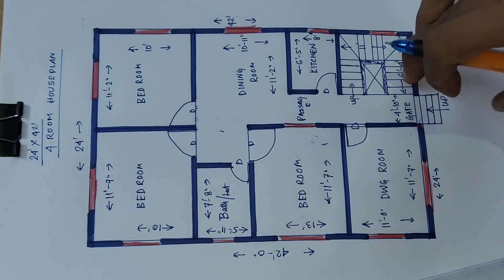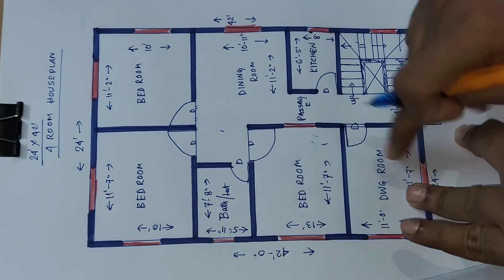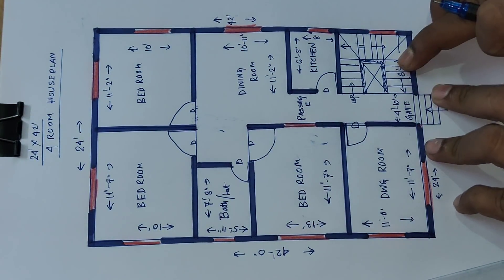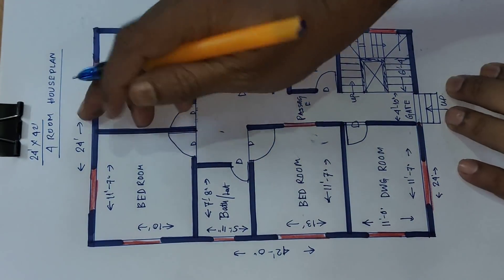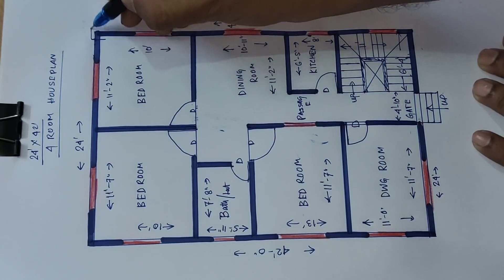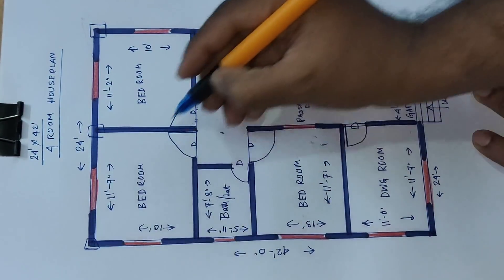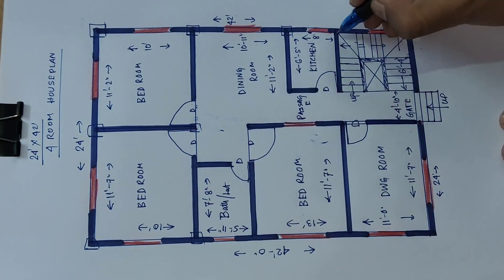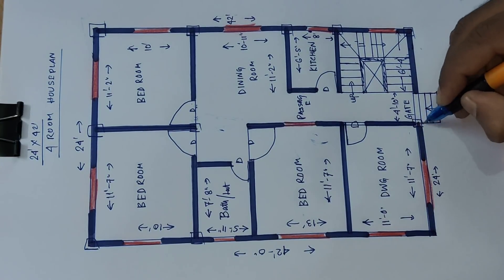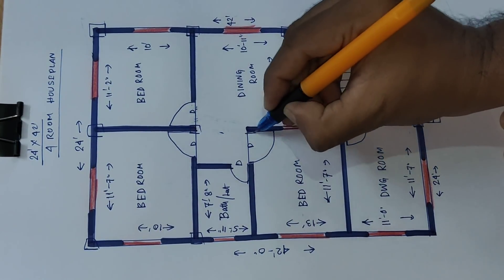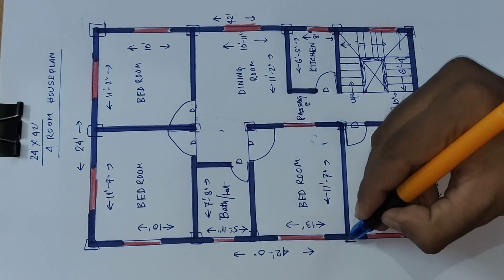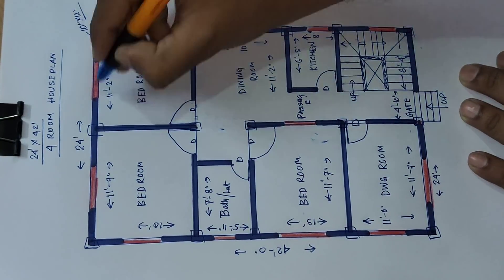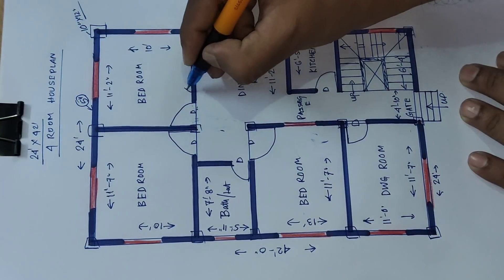This is the 4-room house plan. First: drawing room, bedroom, bedroom, and bedroom, bath and latrine and kitchen, dining and stair hall. Okay, this is the 24 by 42 house plan. And columns: 1, 2, 3, 4, 5, 6, 7, 8, 9, 10, 11, 12, 13, 14, and 16. Column size 10 inch by 12 inch, outside wall 5 inch and inside wall 5 inch.